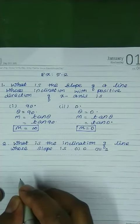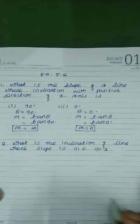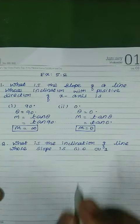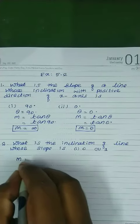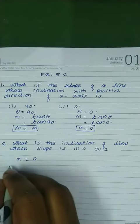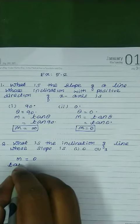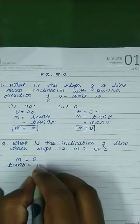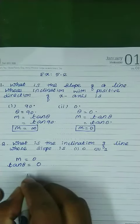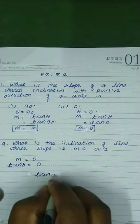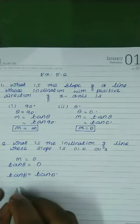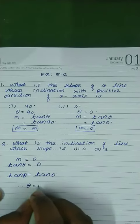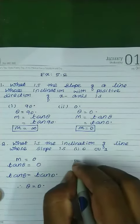Second sum. What is the inclination of a line whose slope is 0 and 1? They give slope. We want to find angle of inclination. m equal to 0. We know that tan theta is slope. That is, tan theta equal to 0. tan 0 degree is 0. Tan theta equal to tan 0. Therefore, theta equal to 0 degree.